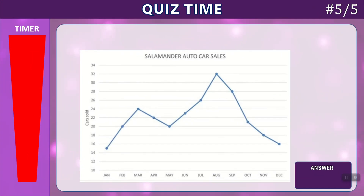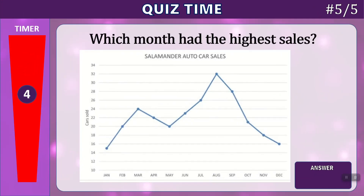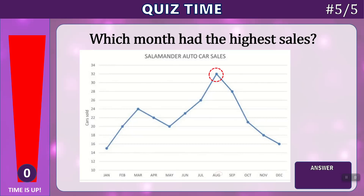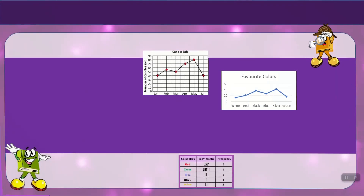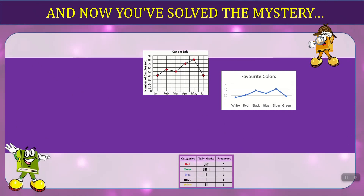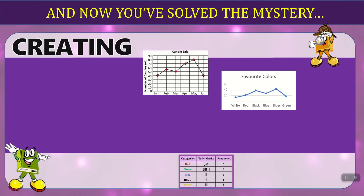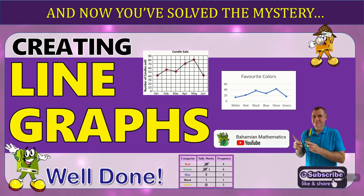Final question, question five: Which month had the highest sales? Time's up. We can see from the graph the highest point is August — our final answer. And now you've solved the mystery of creating line graphs. Well done.